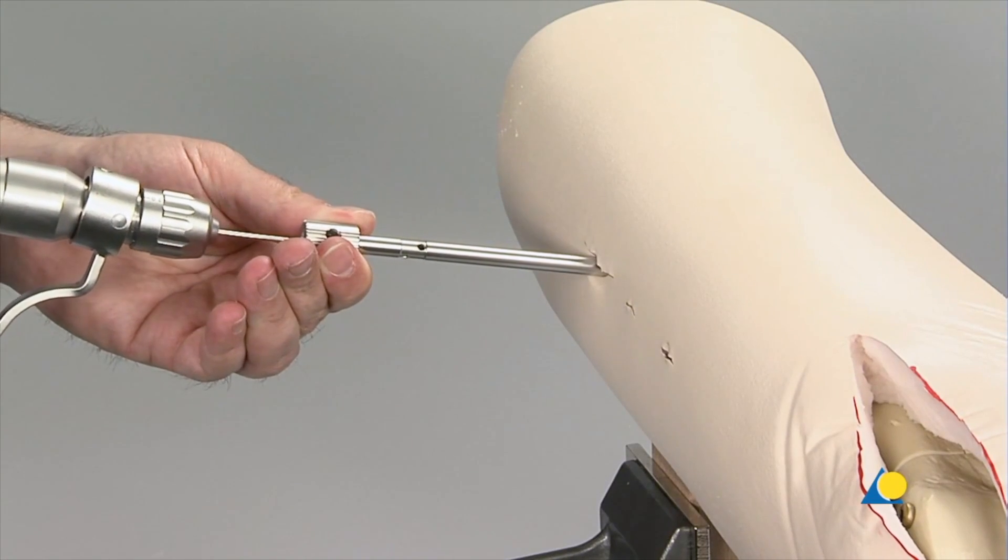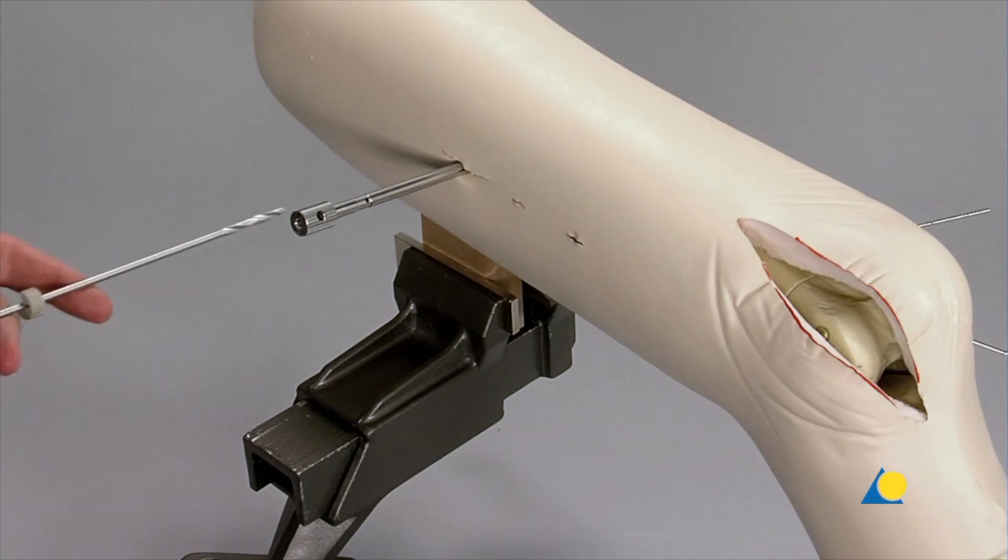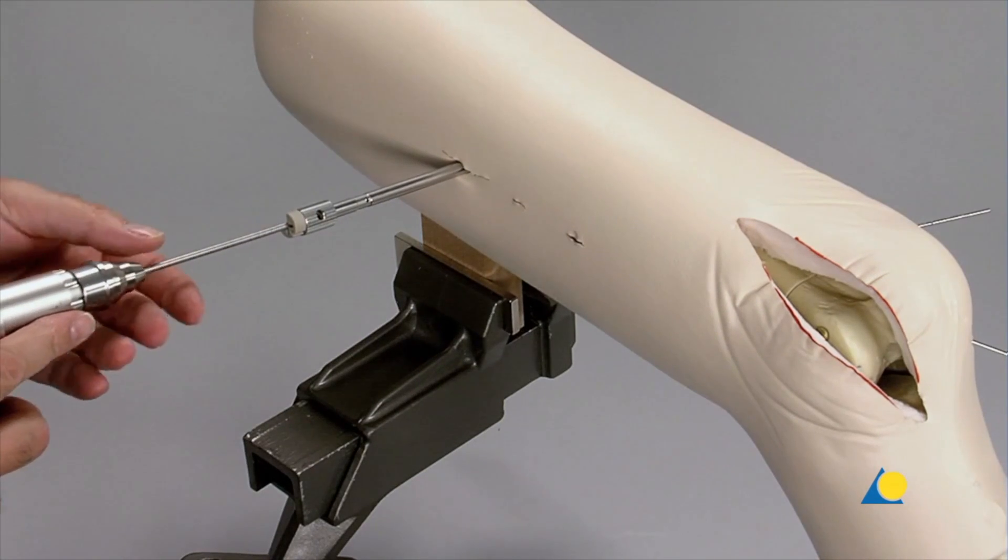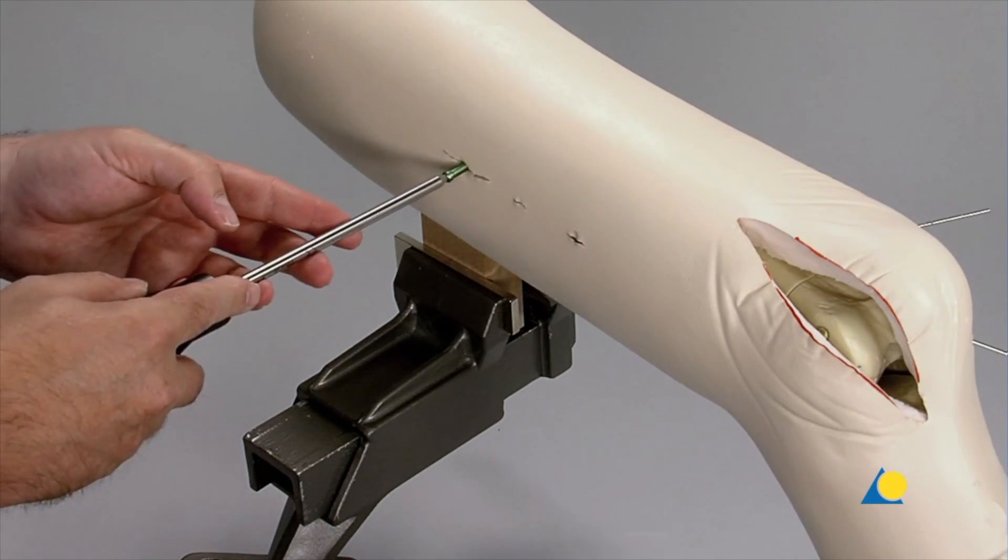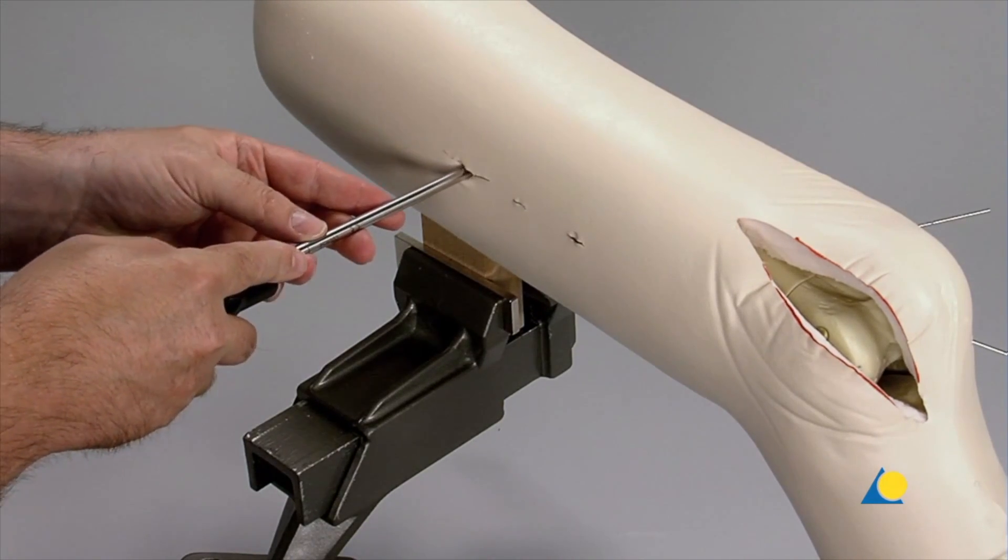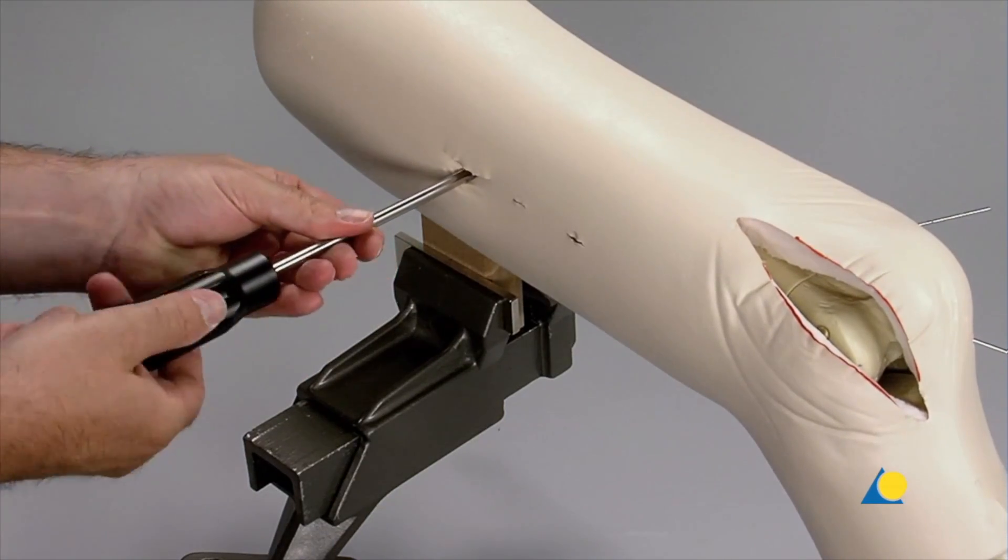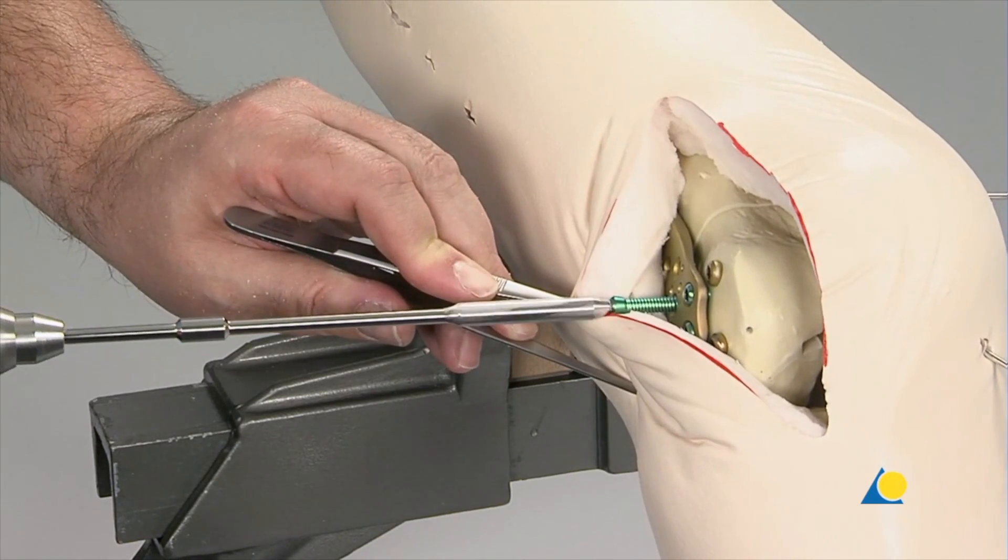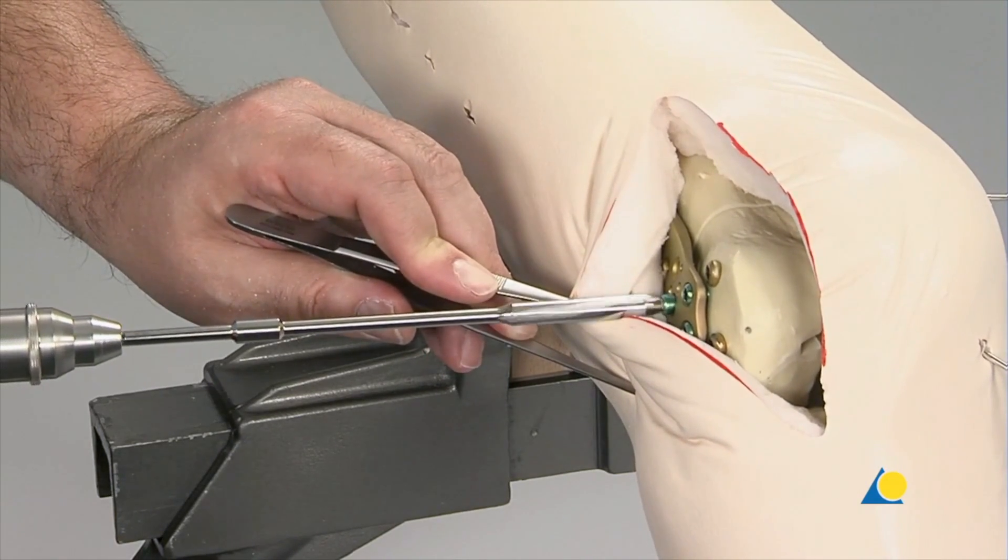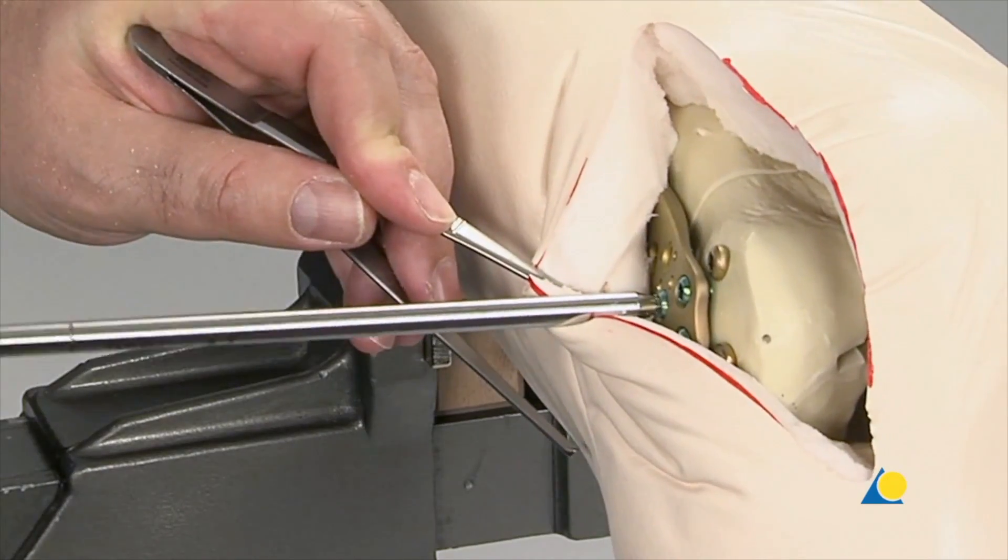The K wire is removed. The screw hole is prepared in the usual manner. The screw is inserted using the torque-limiting screwdriver. Distally, hole A is now filled with a locking screw, first under power. Then, final tightening is done with the torque-limiting screwdriver.